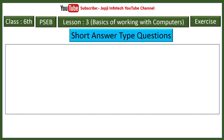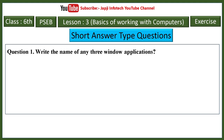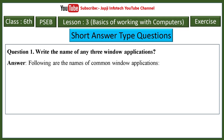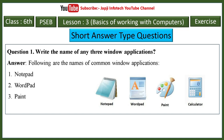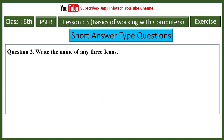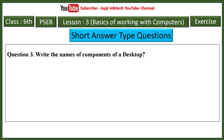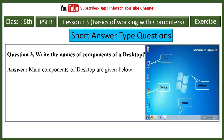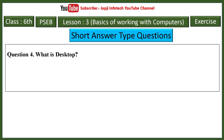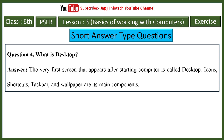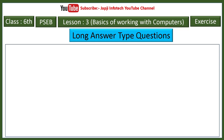Short answer questions in lesson three. First: common Windows applications include Notepad, WordPad, Paint, and Calculator. Second: common desktop icons include My Computer, Network, Recycle Bin, and User Files. Third: main components of a desktop are icons, shortcut, and taskbar. Fourth: the very first screen that appears after starting a computer is called the desktop; icons, shortcuts, taskbar, and wallpaper are its main components.